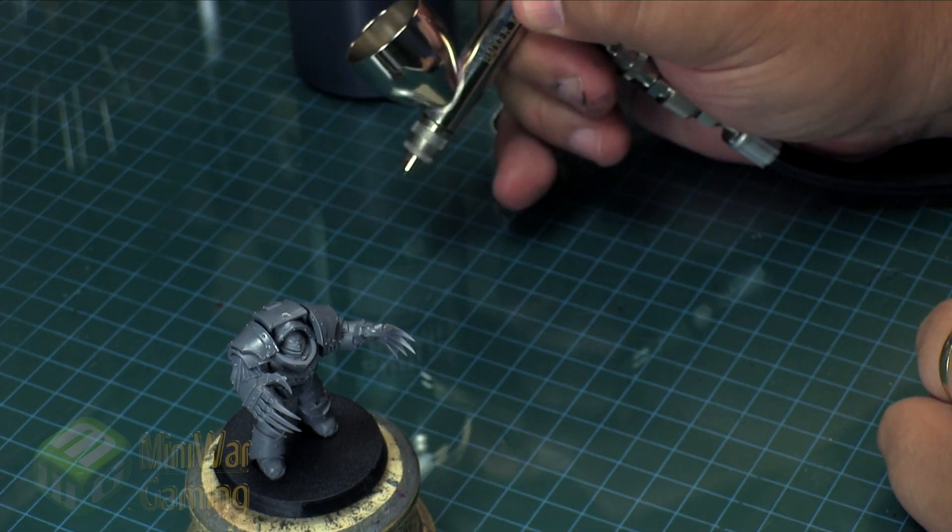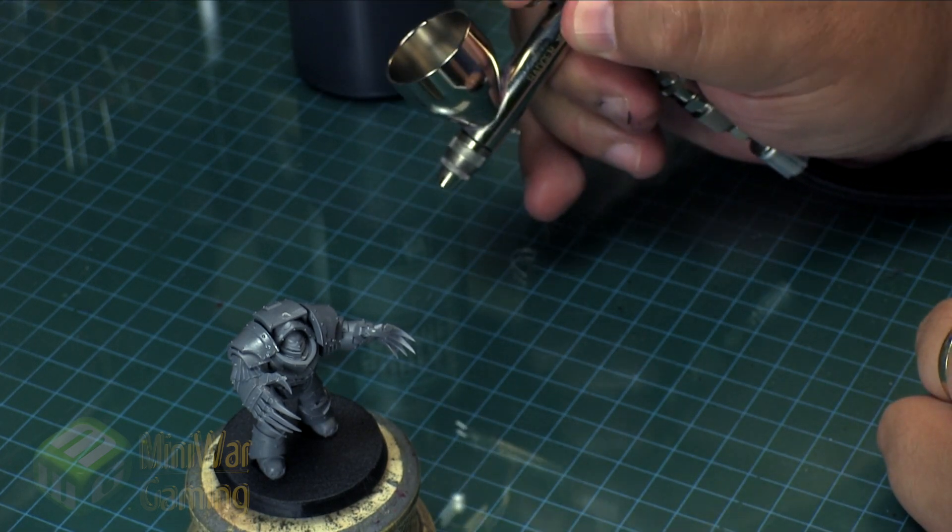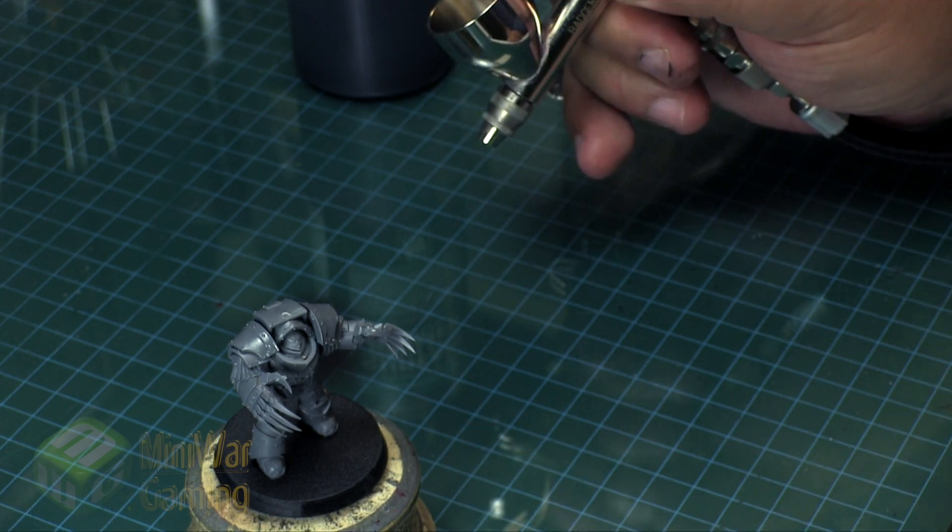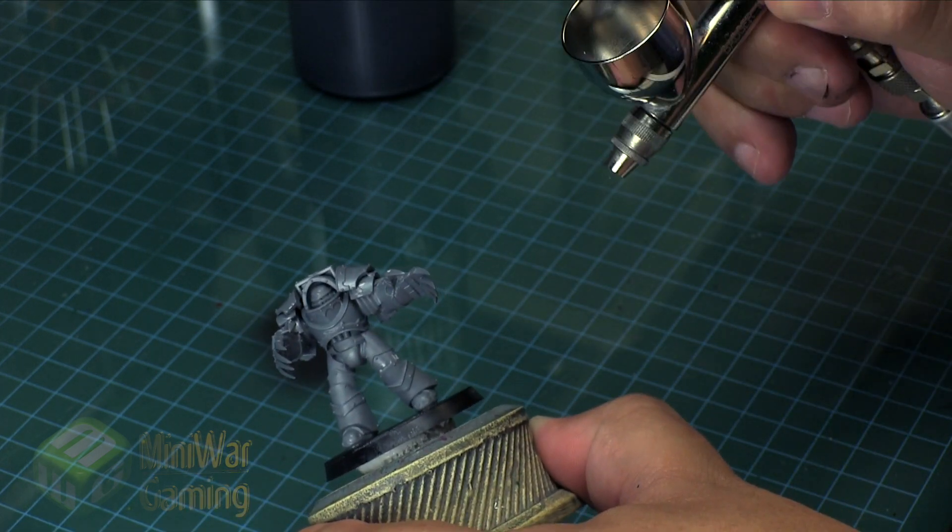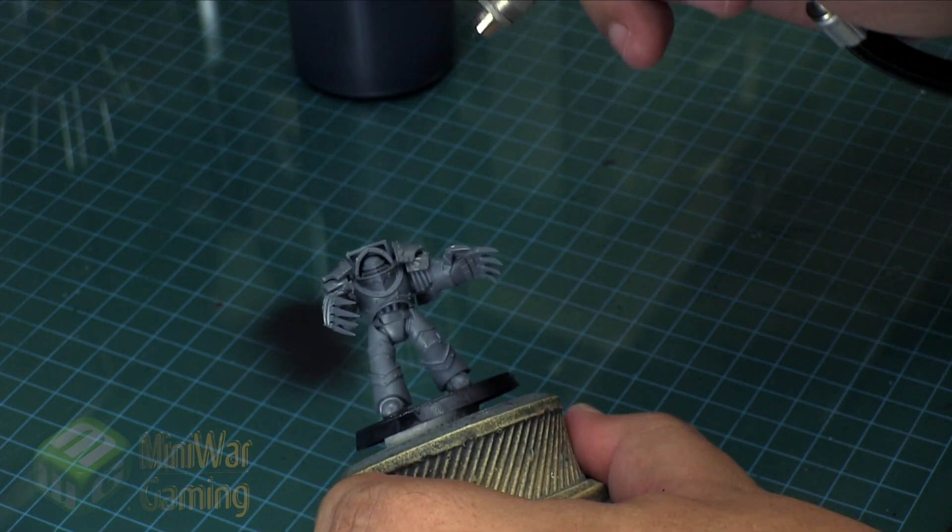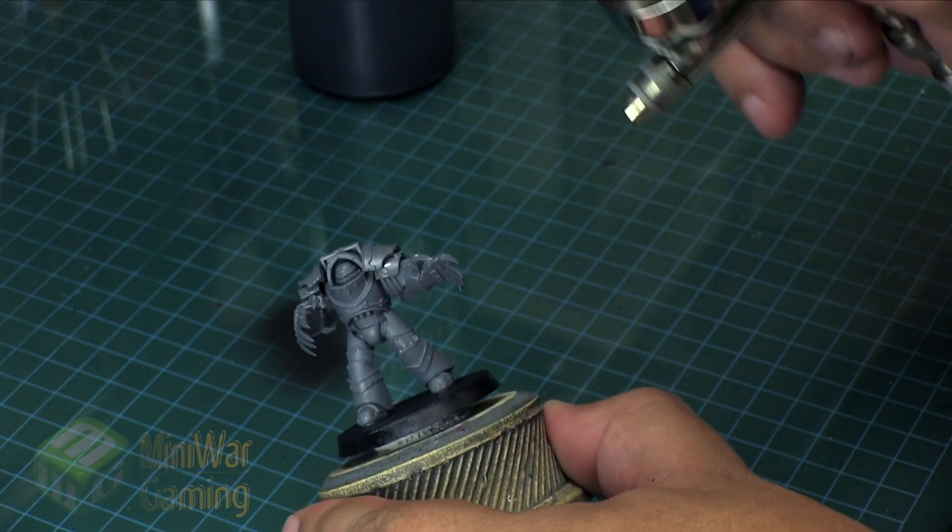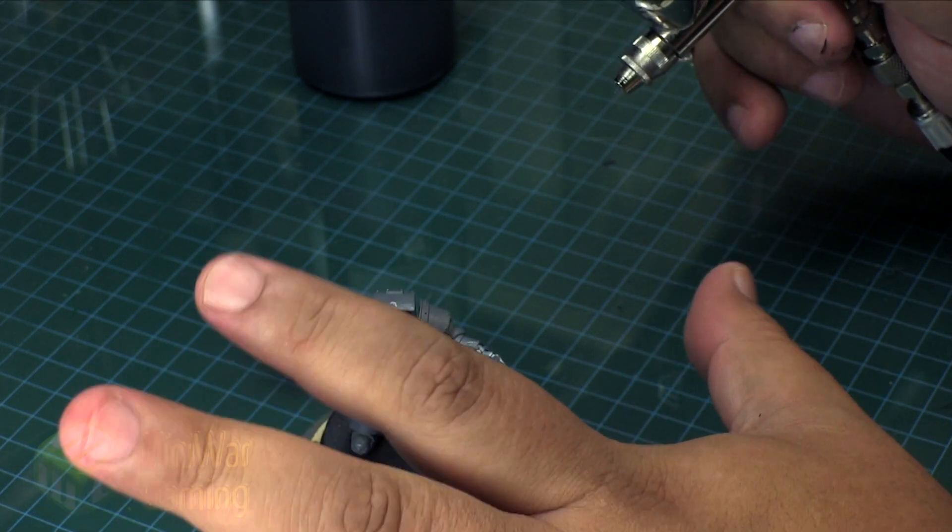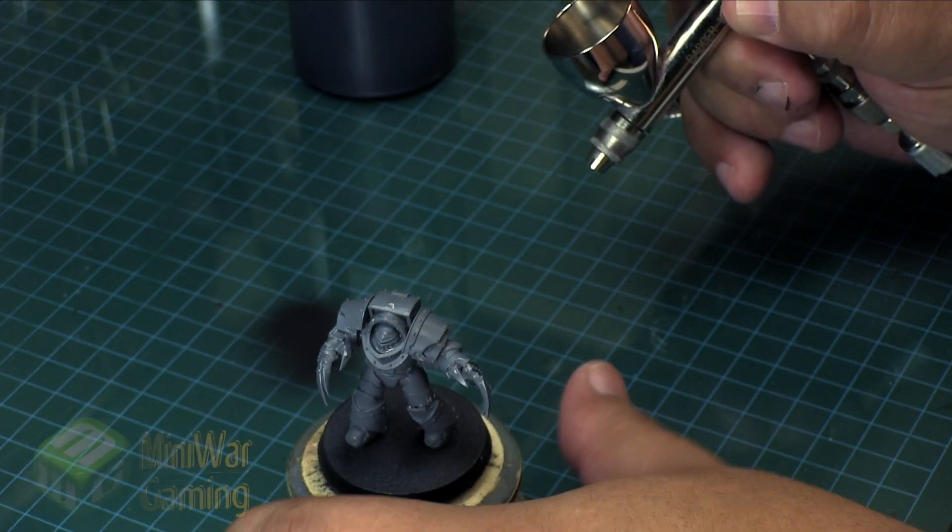Spraying at around 20 PSI, make sure the air is flowing nicely here. When you are priming, I often work with something to hold the model by and I work with the brush up and down the model surface and turning it as well. Often with this hand I will usually wear a glove or something like that.